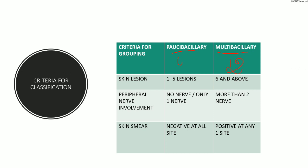There are three criteria for categorization. One is skin lesions, the second is peripheral nerve involvement, and the third one is skin smear. If there are one to five lesions, the patient will come under Paucibacillary. If there are six and above lesions, they will come under Multibacillary.